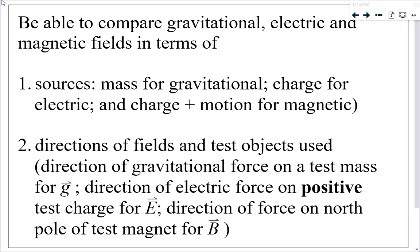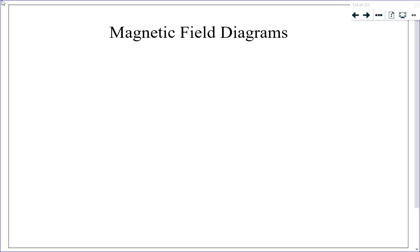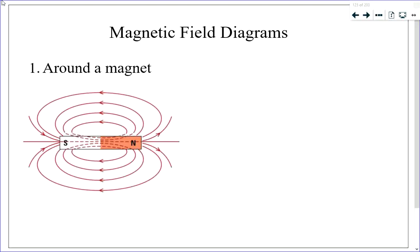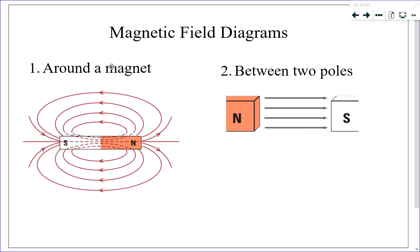Magnetic field lines exit the north pole of a magnet and enter the south pole. When two opposite poles are adjacent (using two magnets or a horseshoe magnet), the field between them is approximately uniform — field lines are parallel and equally spaced between the poles.